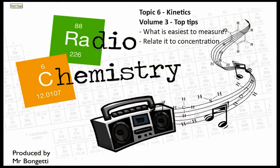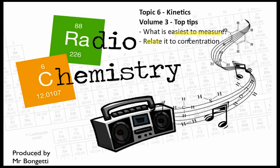So to finish off, some top tips for volume three. If you need to do this in the lab or you're thinking about doing it for your IA, think about what is easiest to measure and easiest to convert to a concentration. And make sure that after you've collected your data that you relate it directly to the concentration, because after all, the rate of reaction is defined as the change in concentration over time.